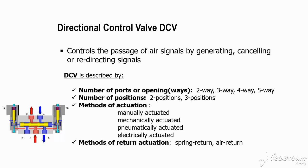Three ports means three holes in the valve. Two positions means a normally closed position and an open position — when you press the valve it goes to open, and when you release it returns to normally closed. Similarly, a 5x2 valve has five ports and two positions. When you operate this valve, one side opens and the other side closes.